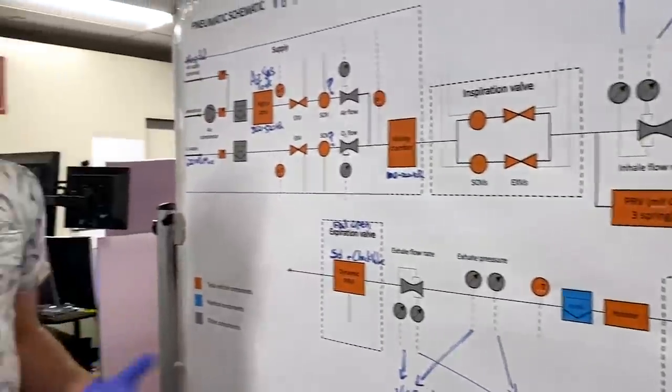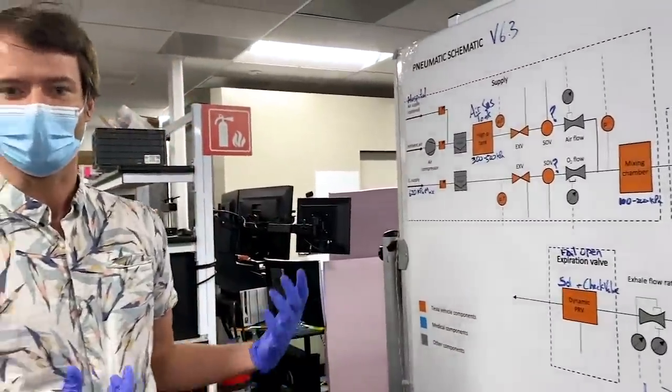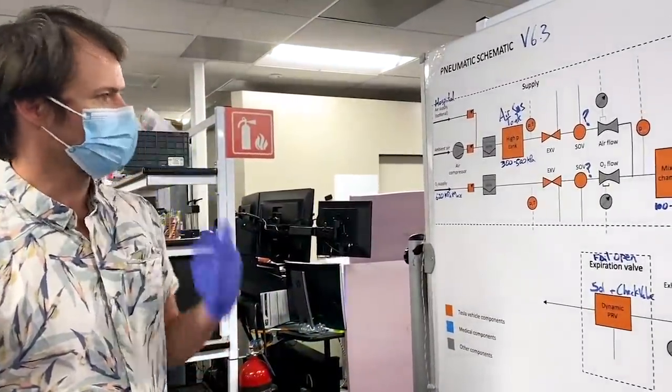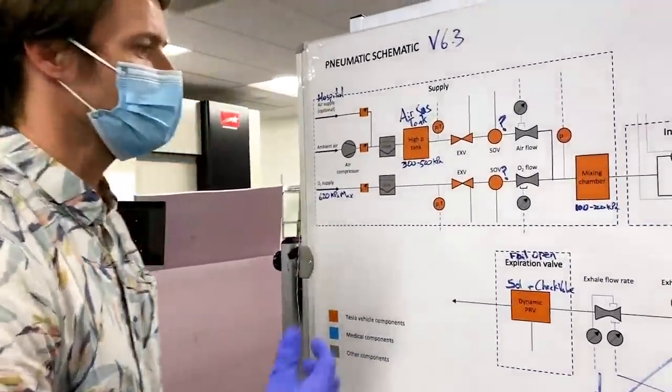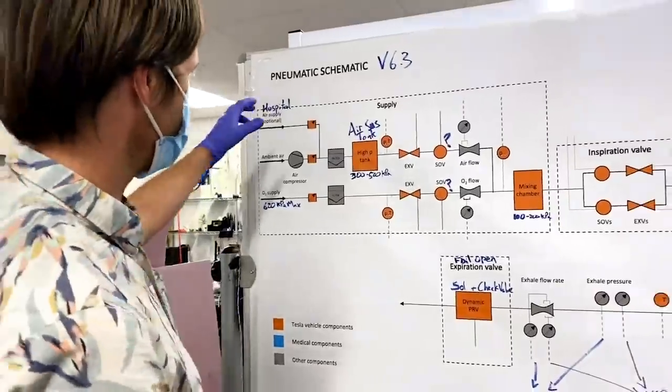What is a ventilator? A ventilator is a device that helps patients breathe who can't breathe well for themselves. And it does that by forcing air into their lungs with a pressure or a volume control. And then they exhale passively.